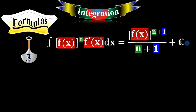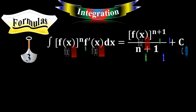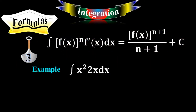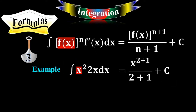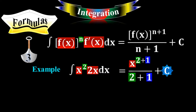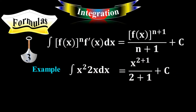For example, the integral of x squared times 2x dx: x squared is f of x, and 2x is its derivative, since the derivative of x squared is 2x. It equals x to the 2 plus 1, over 2 plus 1, plus C, which equals x cubed over 3 plus C.